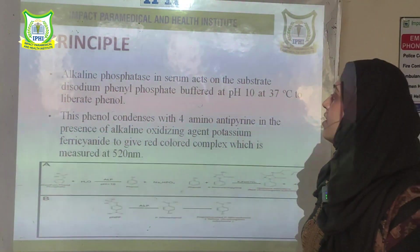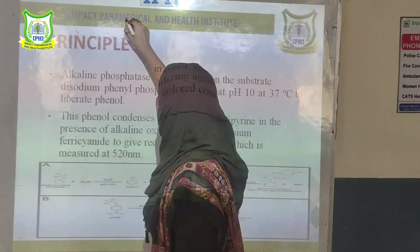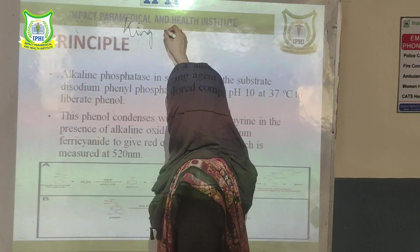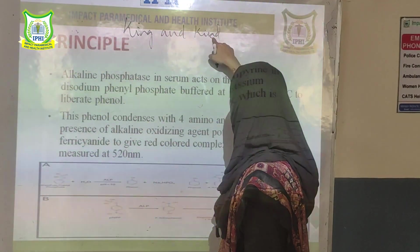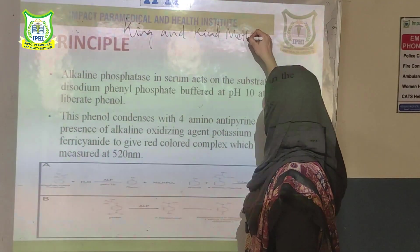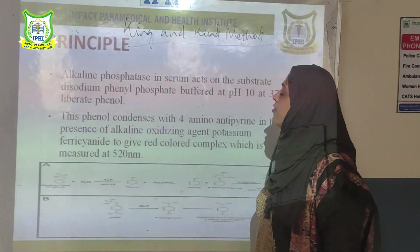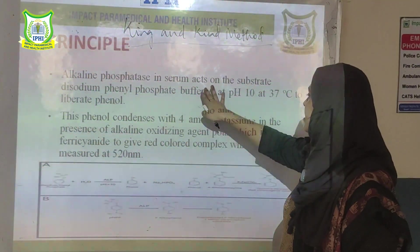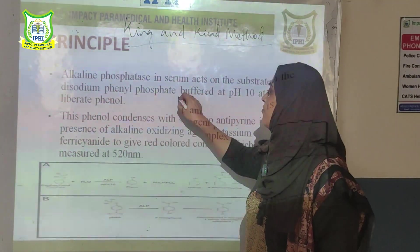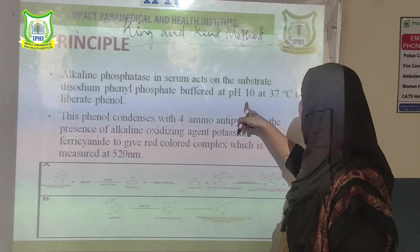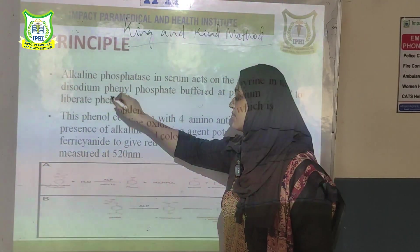Next we will see the estimation of alkaline phosphatase by King and Kind method. The principle is that alkaline phosphatase present in the serum acts on the substrate disodium phenyl phosphate at 37 degrees and at pH 10, and liberates phenol.